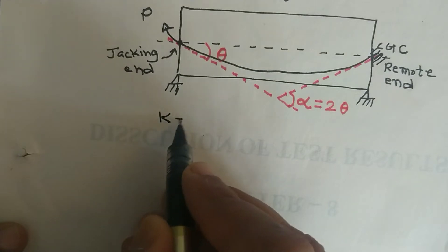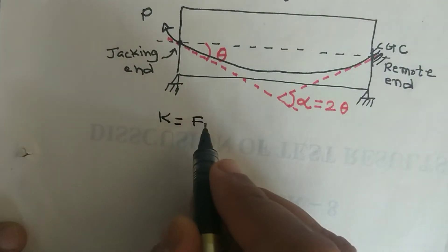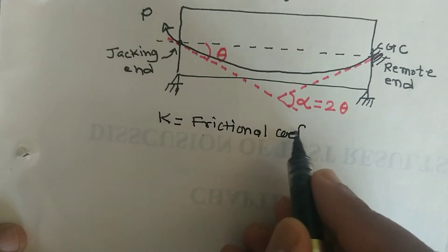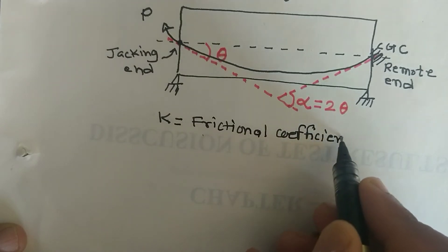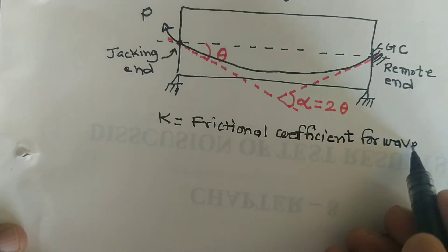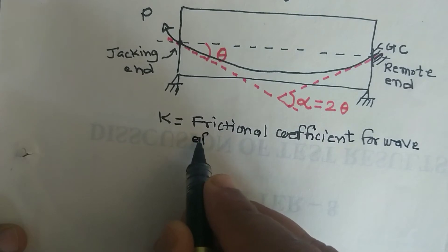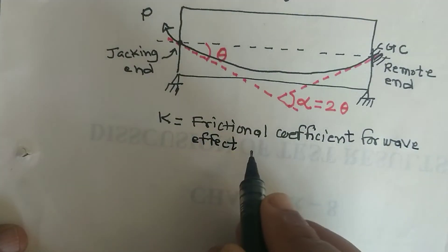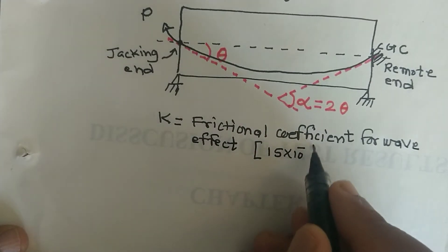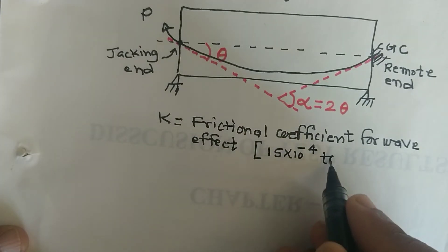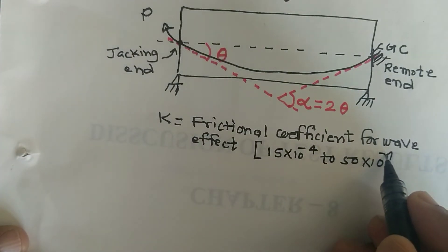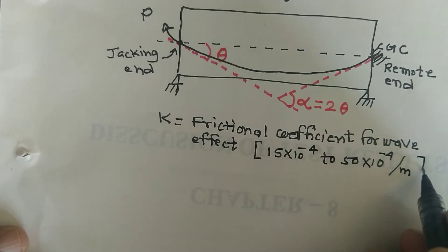What is the next term K? K is the frictional coefficient for wave effect. Generally, the value of K is from 15 × 10⁻⁴ to 50 × 10⁻⁴ per meter.